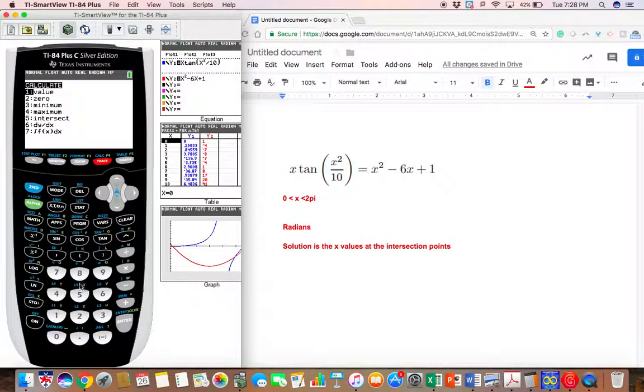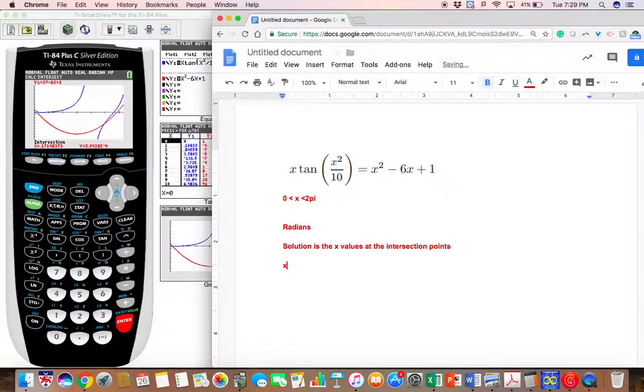The fifth option is intersect, so we press 5. When it says first curve, it will by default be on the first curve, so just press enter. Then it jumps to the second curve—press enter here. Now we have to guess. We have two points and we want them both, but to tell the calculator which one we're interested in, we can either scroll or type a number close to that x-value. Once you're close, enter your guess and it tells you the intersection point. Our first solution is x ≈ 0.171.